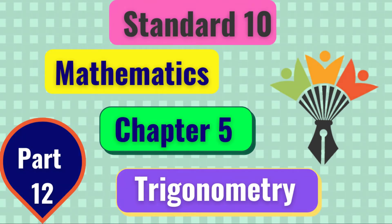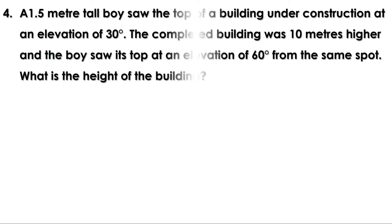Welcome to Maths Companion. In the last video we discussed some problems on page 122 — there was a homework. Let us check the answers now. A 1.5 meter tall boy saw the top of a building under construction at an elevation of 30 degrees. The completed building was 10 meters higher and the boy saw its top at an elevation of 60 degrees.